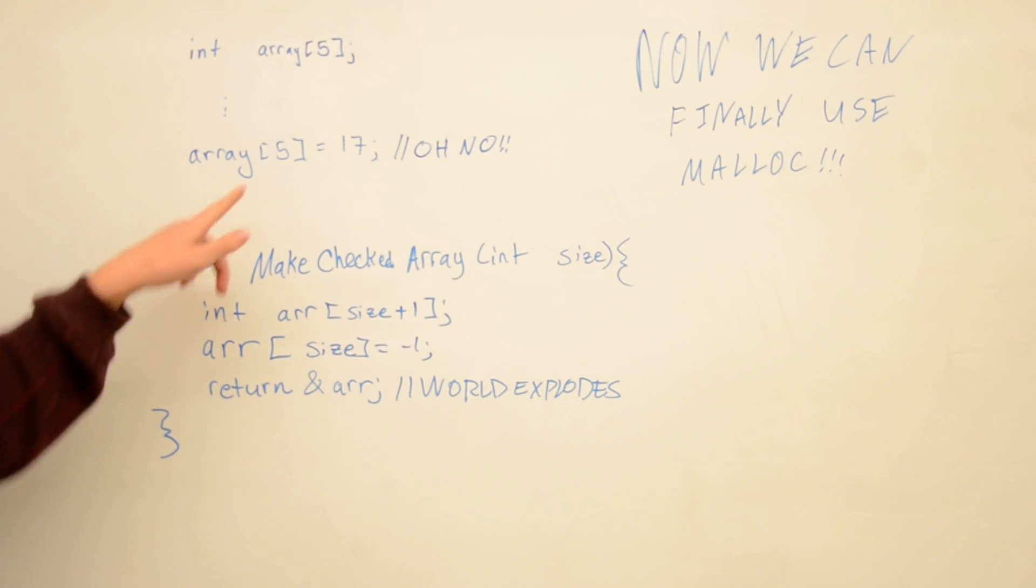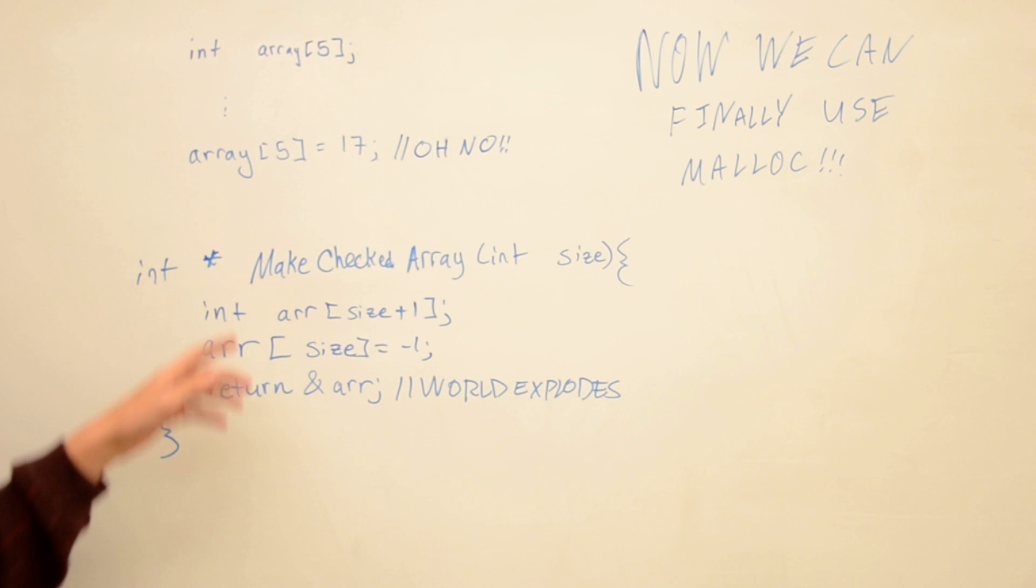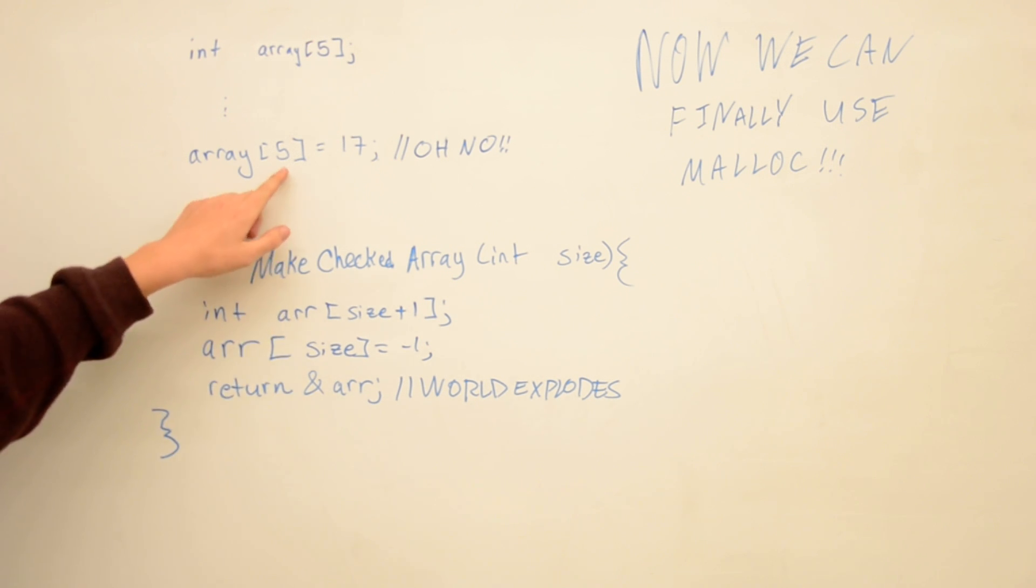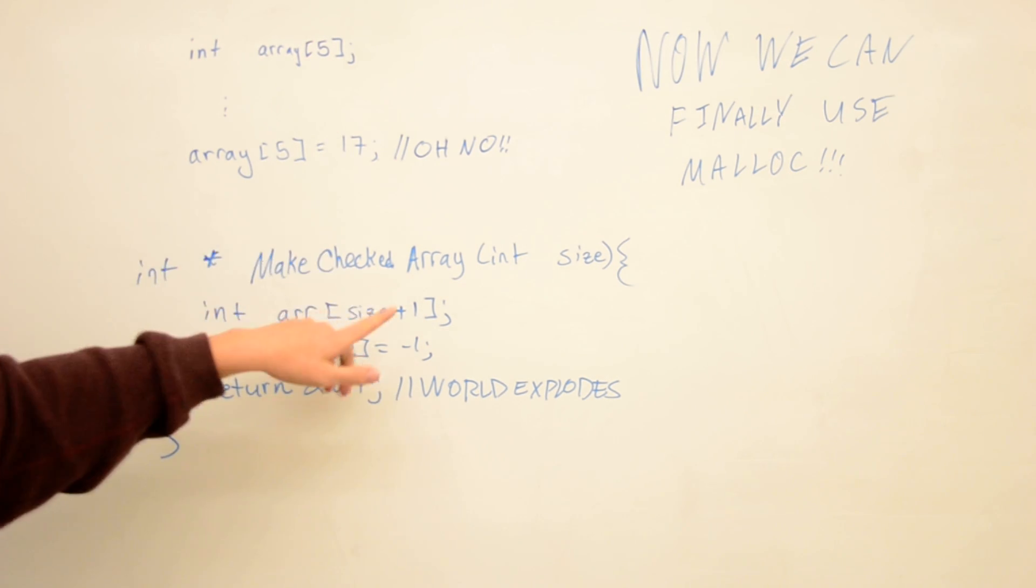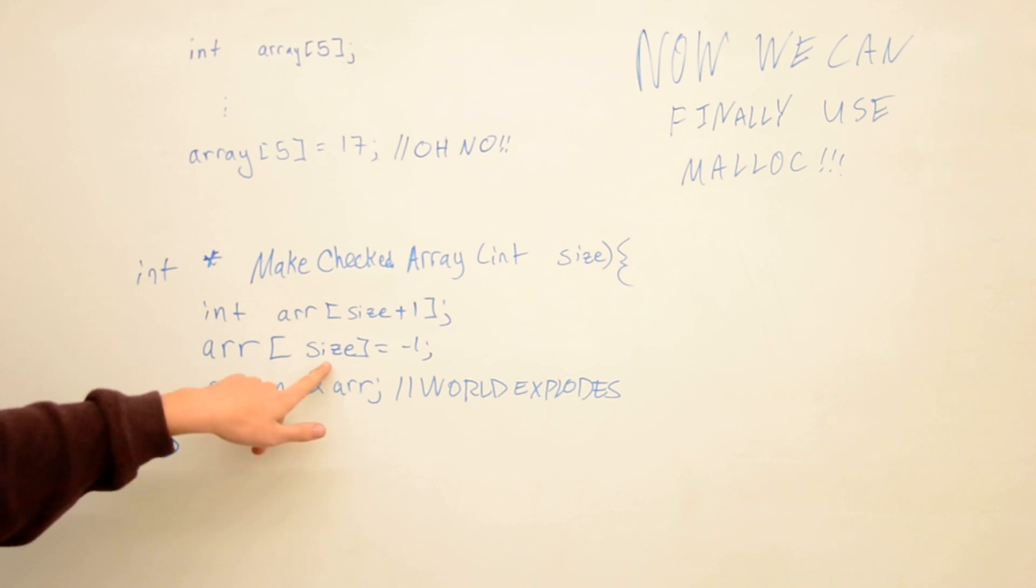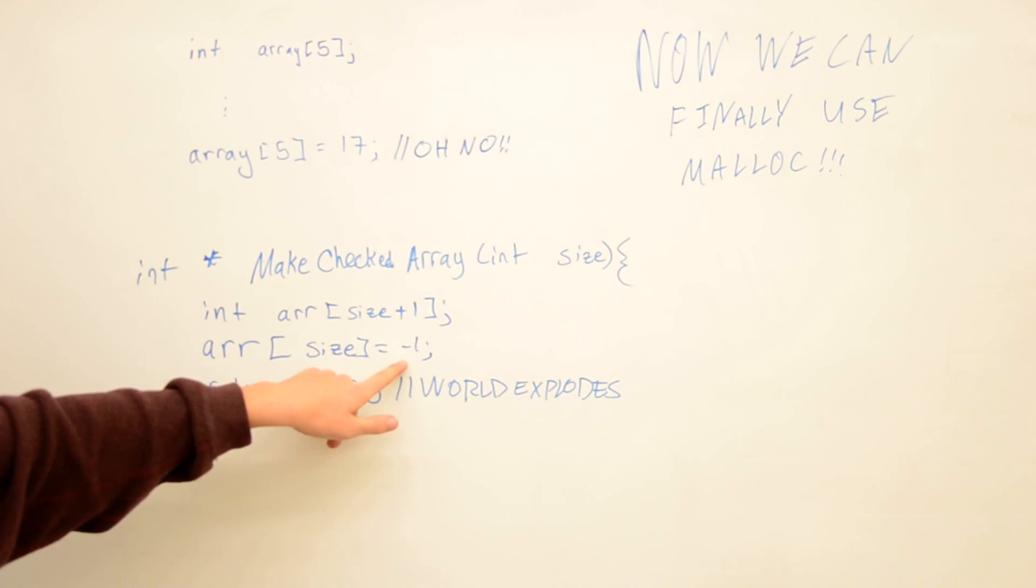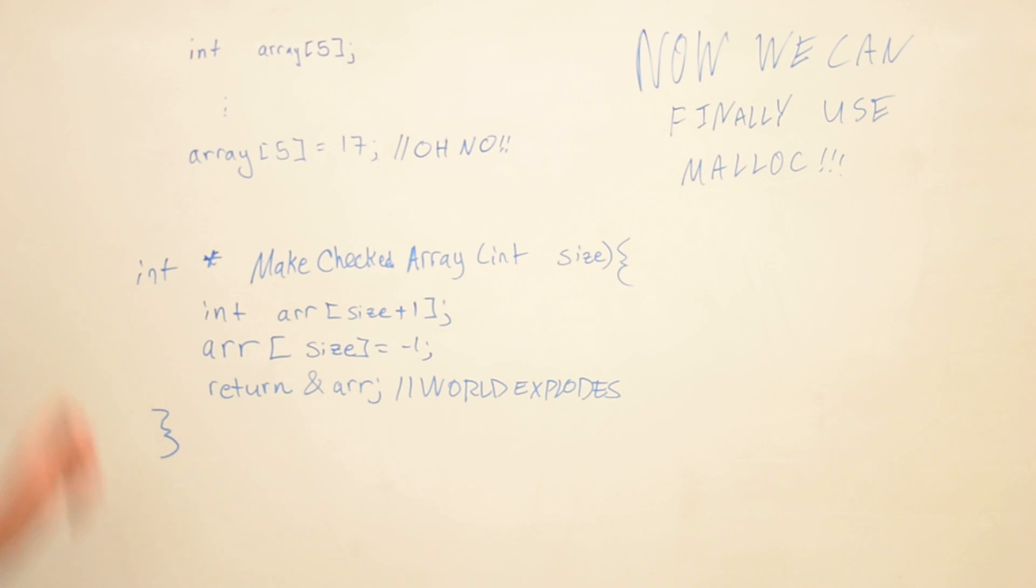Then later on, when you make this mistake, you can call another function like check_array, and it'll check the final number of the array. If it's not negative one anymore, then you know that you've run over the bounds of the array and made a mistake.